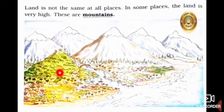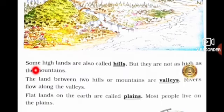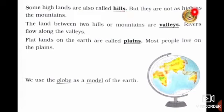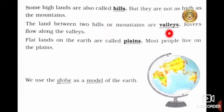See here, this is a picture of mountains. You can see the high mountains over here. Some high lands are also called hills — H-I-double-L-S, hills. But they are not as high as the mountains. The land between two hills or mountains are valleys — V-A-double-L-E-Y-S, valleys.